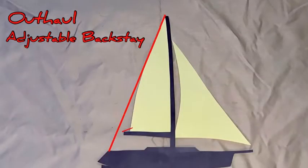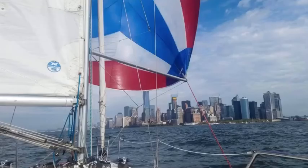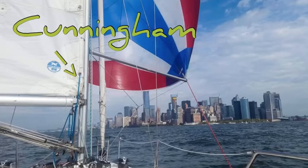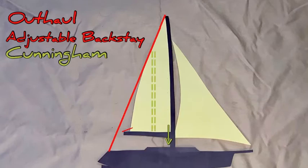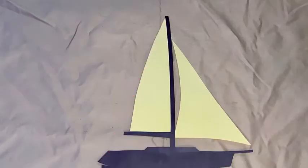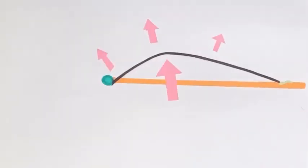The last piece of running rigging that we may have to affect the draft is the Cunningham. The Cunningham is a little line that's run through a grommet just above the tack of a sail. By tensioning the Cunningham, that's going to increase the tension of the luff of the sail, which in turn flattens the sail slightly, but more importantly moves the draft forward. This means that the power is being redirected at a more efficient trajectory.